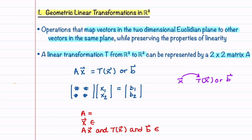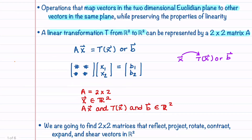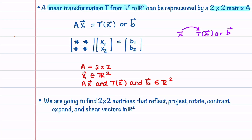Our A is going to be a 2 by 2 matrix, our x is going to be an element of R2, and then Ax, T of x, and B are also elements of R2. We're going to spend the rest of this video finding 2 by 2 matrices that reflect, project, rotate, contract, expand, and shear vectors in R2.